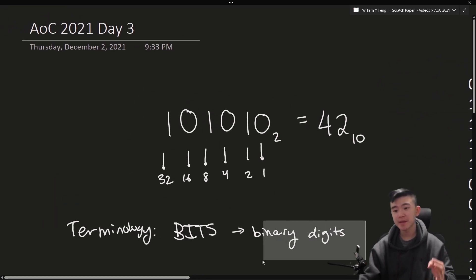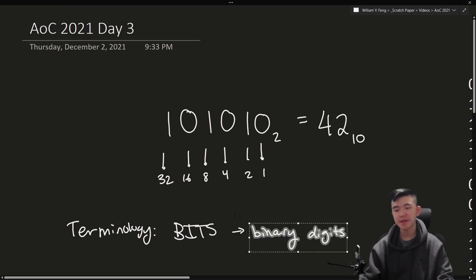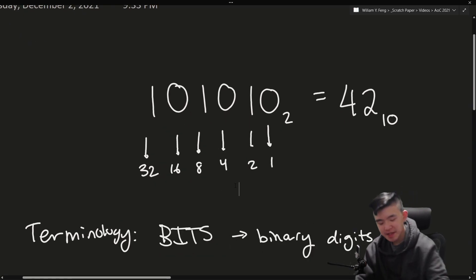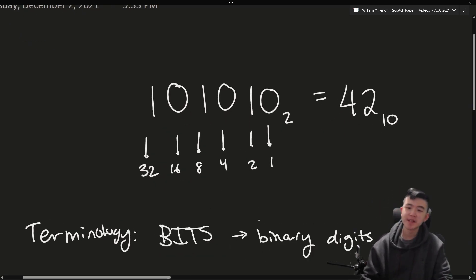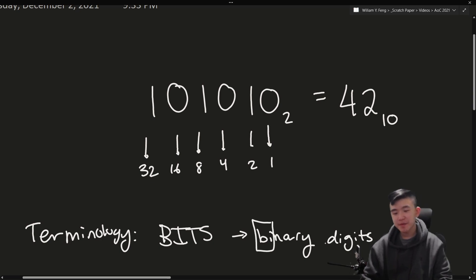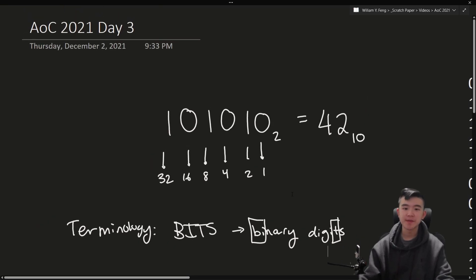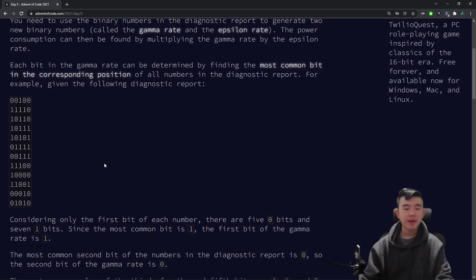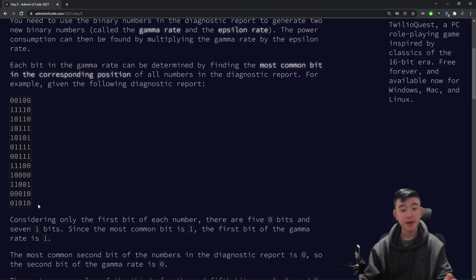Also, instead of saying binary digits all the time, we like to say bits, because it's shorter and it sounds cool. Bits comes from the 'bi' in binary and the 't' in digits — there's a fun fact for you. So we are given a bunch of binary numbers consisting of bits. Each bit is a 0 or a 1.